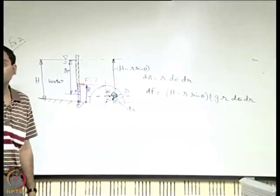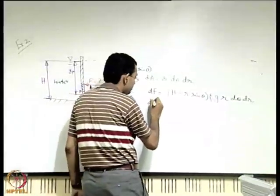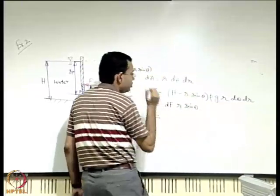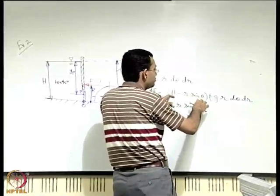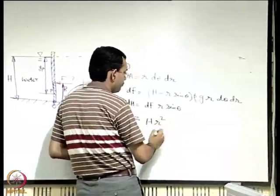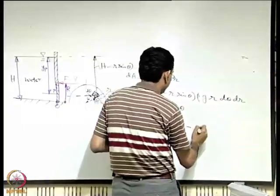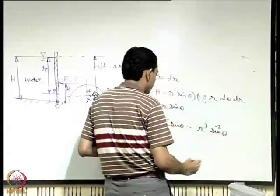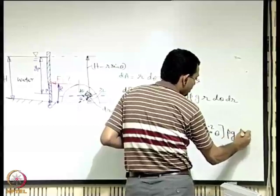The moment of this force with respect to O is dF times r sin θ. Breaking into two terms and multiplying by r sin θ gives: (H r² sin θ − r³ sin² θ) × ρg dθ dr.